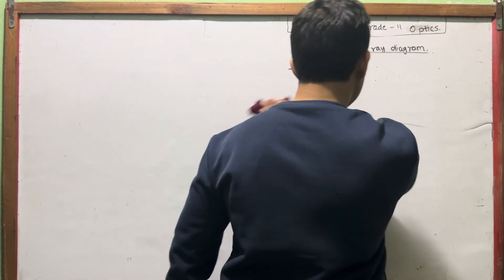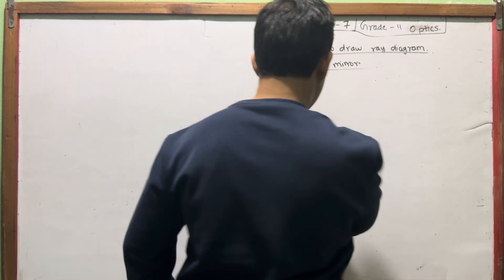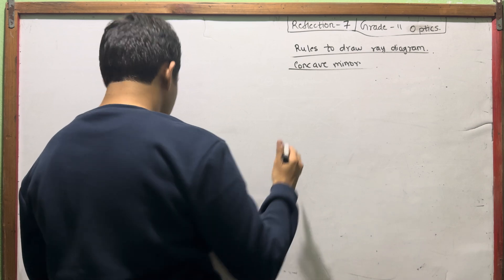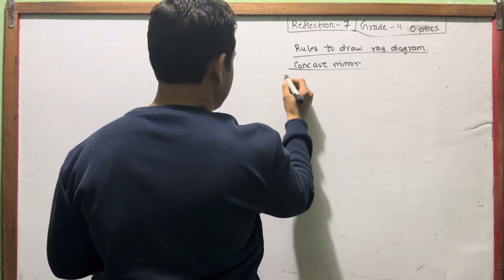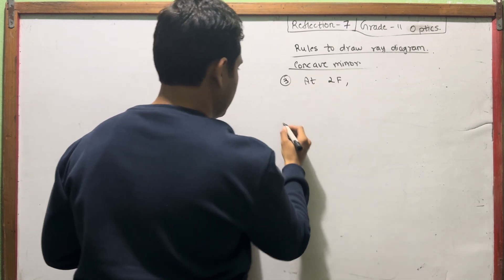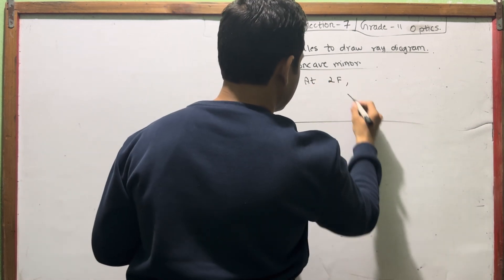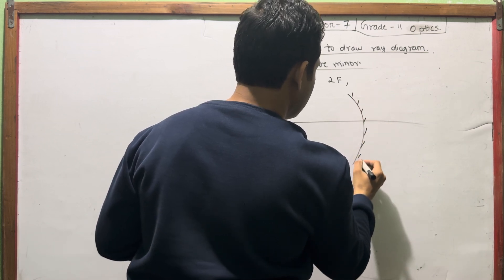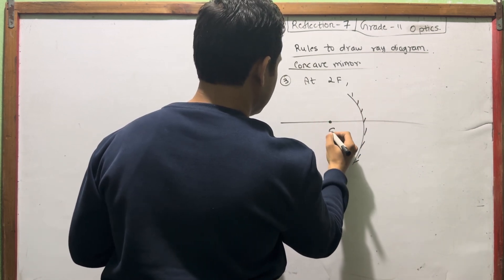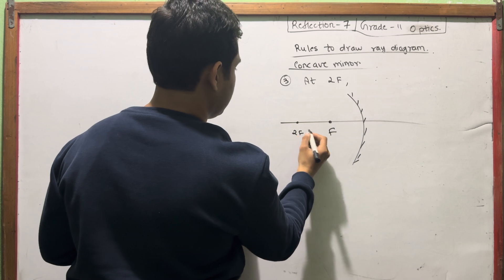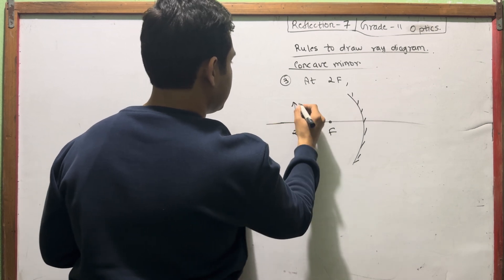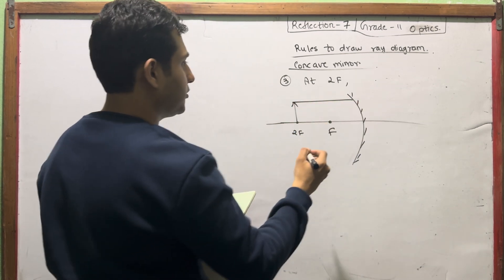Number 3 is at 2F. Then we will see that. Let me show this diagram — the diagram will be the same. 2F: what is it? We will show that at 2F the image is the same size.